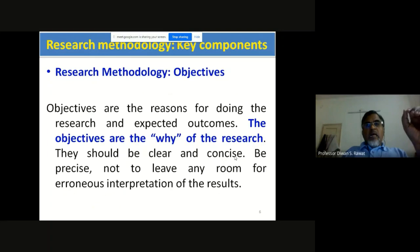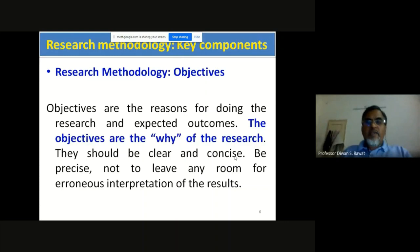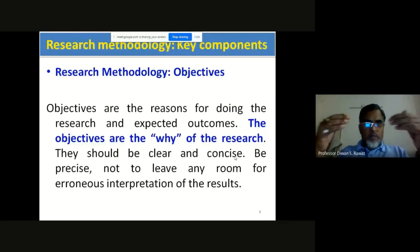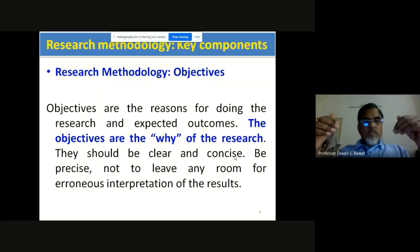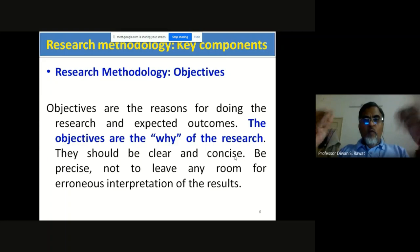The key components of research methodology include, first, the objective. Objectives are the reasons for doing the research and the expected output — the 'why' of research. When you do research, you need a clear objective: what do you want to do? Objectives should be precise and clear, leaving no room for ambiguous interpretation. Let me give you a small example of the importance of 'why' in research.